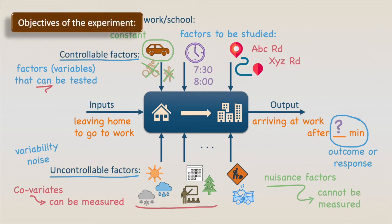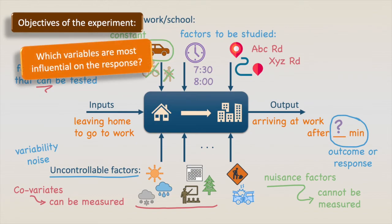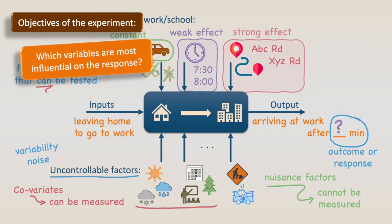The objectives of the experiments are to answer the following questions. First, which variables are most influential on the response? Maybe with the experiment we realize that the leaving time almost doesn't affect the commuting time, but the route has a strong effect.